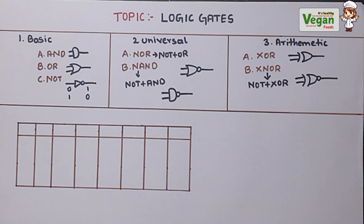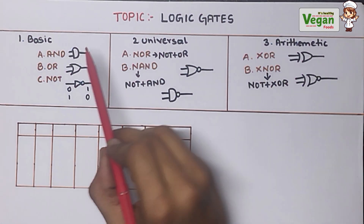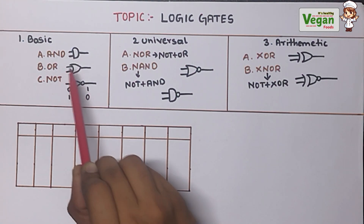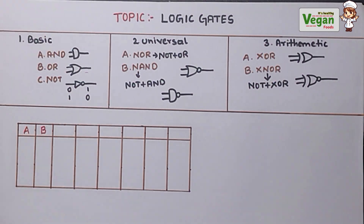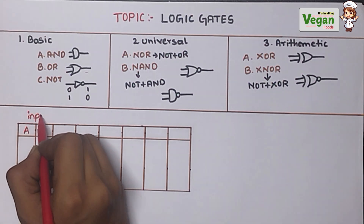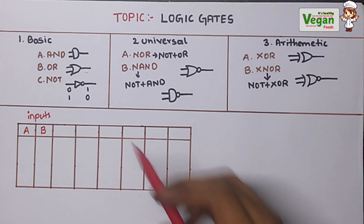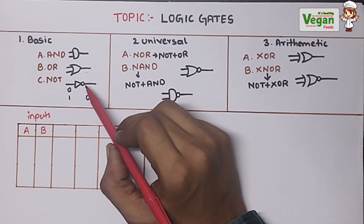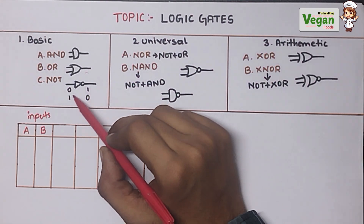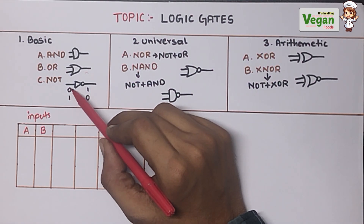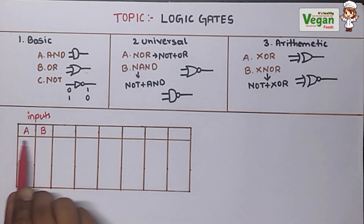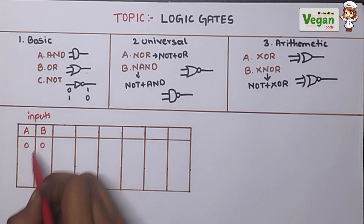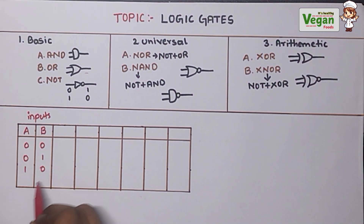Now we have represented the block diagram of each logic gate. Let's design a truth table with their formulas. Since most logic gates have two inputs and a single output, let's take two inputs: Input 1 as A and Input 2 as B. The four input combinations are: 0,0 — 0,1 — 1,0 — and 1,1.